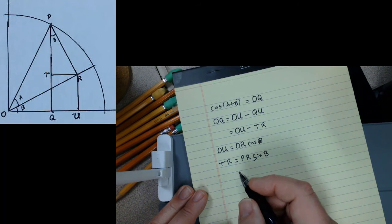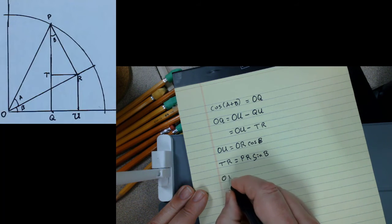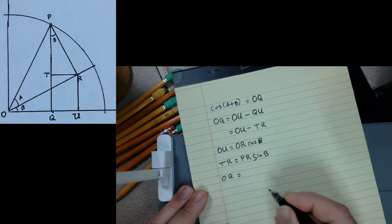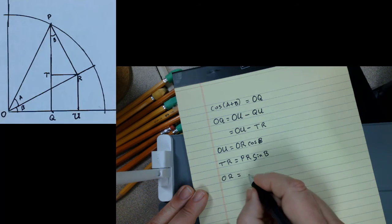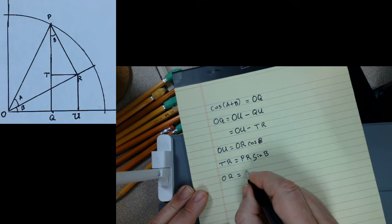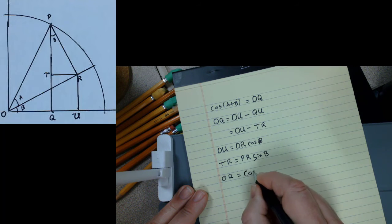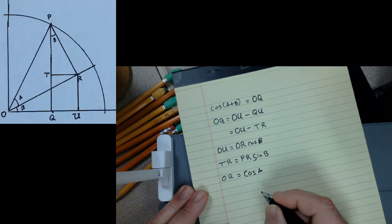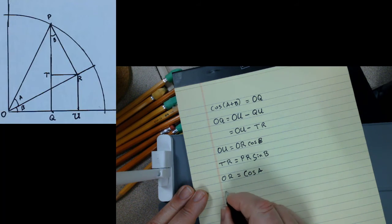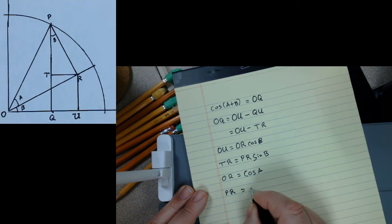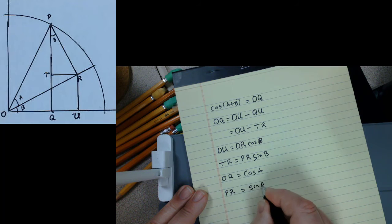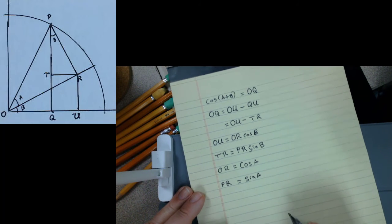Now, OR is itself equal to the cosine of A, and PR itself is equal to the sine of the angle A.